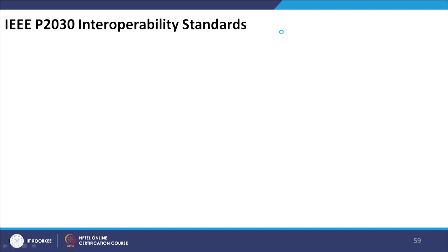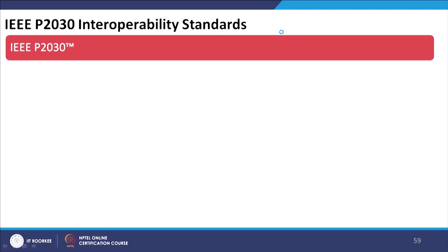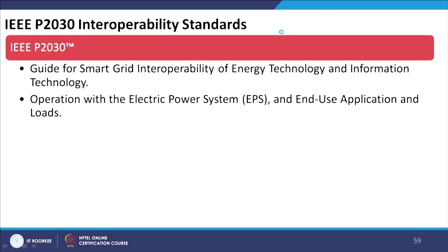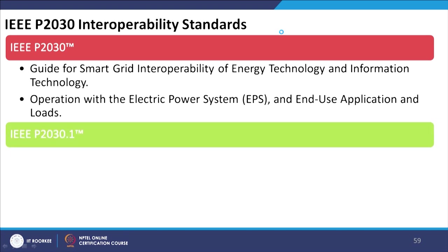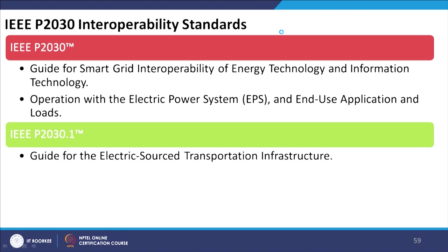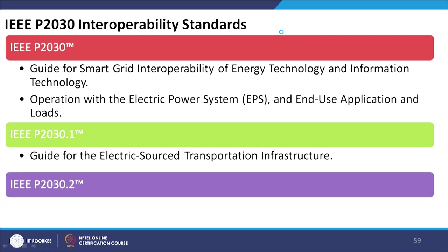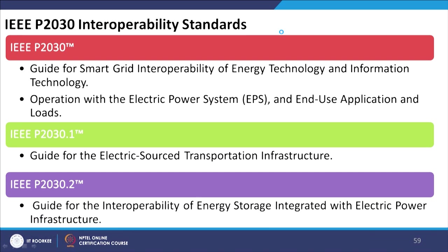IEEE P2030 covers interoperability standards — specifically, a guide for smart grid interoperability of energy technology and information technology operation with electric power systems and end-use applications and loads. IEEE P2030 version 1 provides a guide for electric source transportation infrastructure, and IEEE P2032 provides a guide for the interoperability of energy storage integrated with electric power infrastructure.